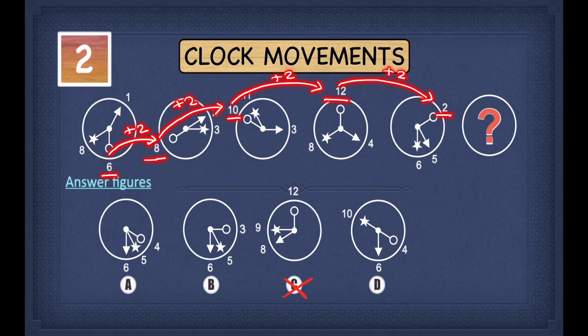In clock movement, when you're adding you're moving forward. So adding 2 to 12 means moving two steps forward from 12, which lands you on 2. Following the same pattern, to find the answer we add 2 to 2, giving us 4.